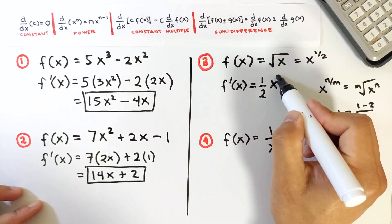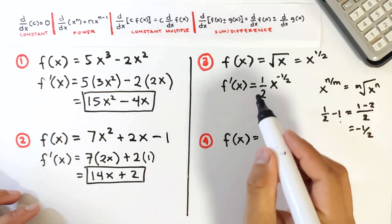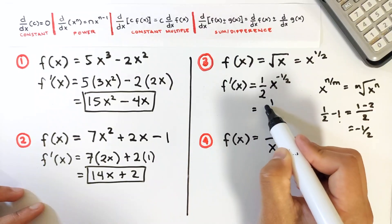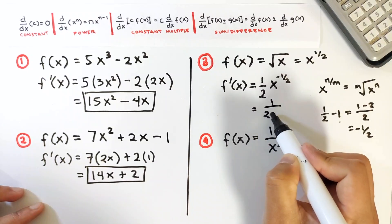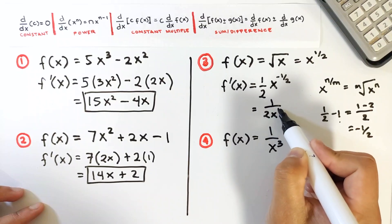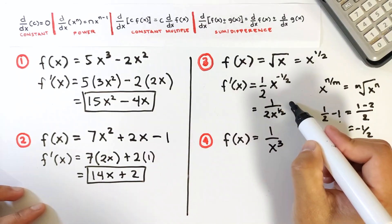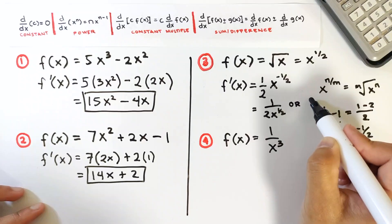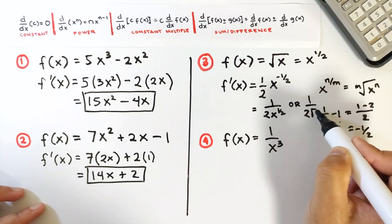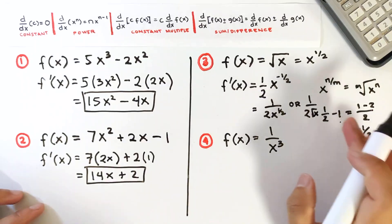So the exponent is negative 1/2. Simplifying: this equals 1 over 2x raised to 1/2, or we can write the final answer as 1 over 2 times the square root of x. That is the final answer.